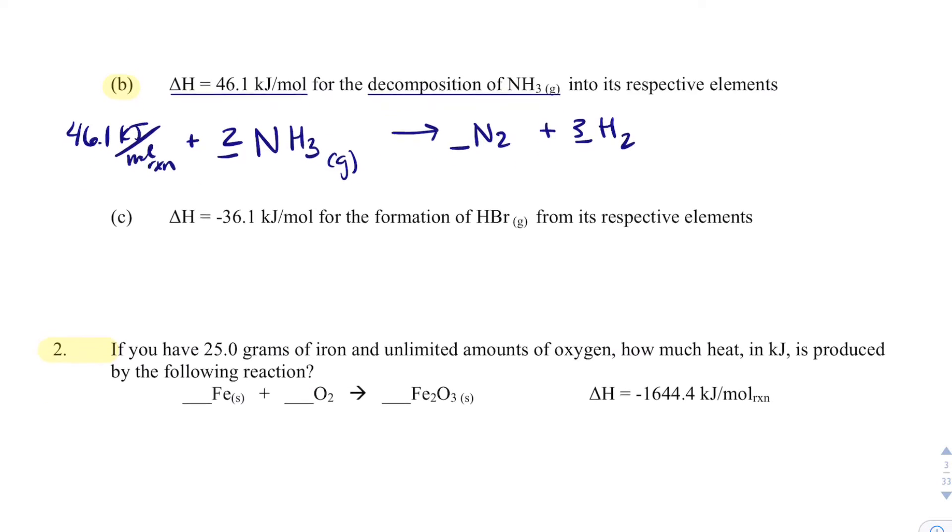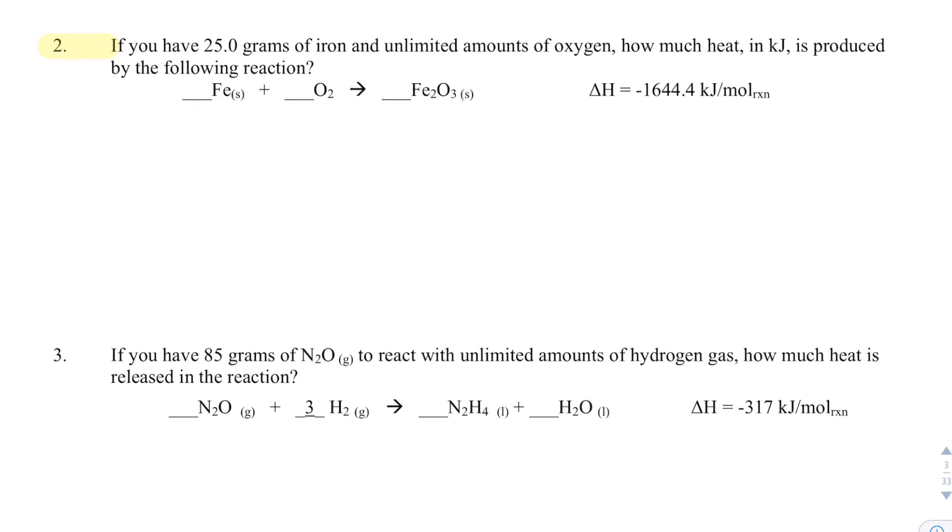We can see this in stoichiometry pretty nicely. In question number two, I have 25 grams of iron and unlimited amounts of oxygen. That means oxygen is my excess reactant and iron is my limiting reactant, and I want to know how much heat in kilojoules is produced. First thing I need to do is balance it, and it looks like I'm losing heat, so I'm going to say plus 1,644.4 kilojoules per mole of reaction. I'm going to start out with 25.0 grams of Fe.